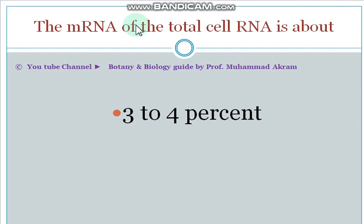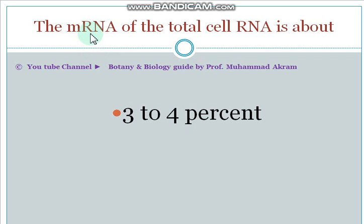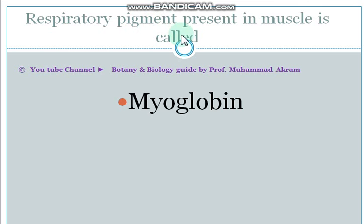The messenger RNA of total cell RNA is about 3 to 4% — meaning that 3 to 4% of the total RNA present in a cell is messenger RNA. The respiratory pigment present in muscles is called myoglobin.